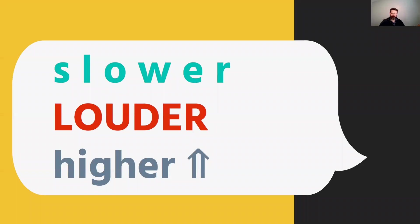As we mentioned, and just to review again: stress patterns in English are indicated through slower, louder, and higher pitch in our voice. So when we want to indicate that a syllable is stressed, we will say it more slowly, loudly, and with higher pitch, and we'll do the same when we want to stress one word over another.